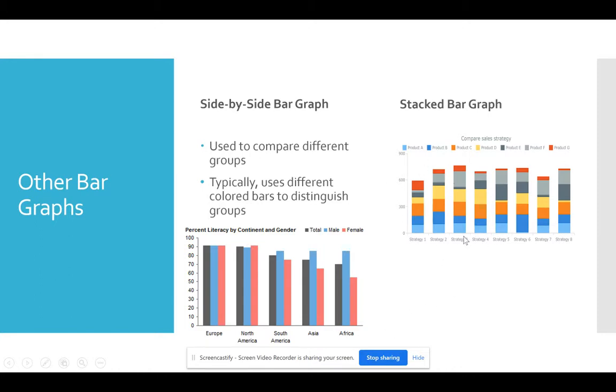And then you also have stacked. Stacked, to me, is a little bit harder to read. But you have the different colors to represent, in this case, different products and the sales strategy that you used. So these are more applicable if you're going to compare more than one data set.